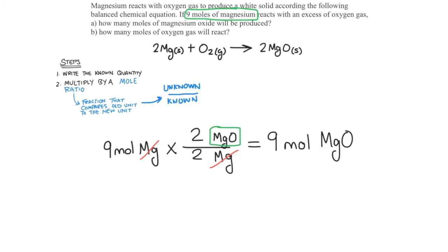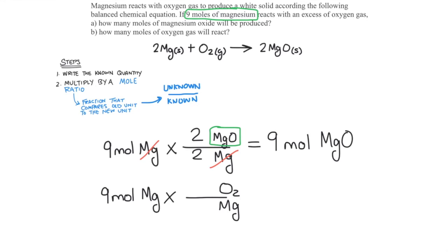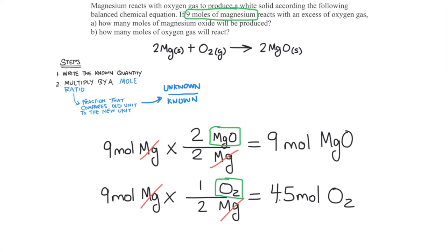This answer makes sense because the recipe says we should get equal quantities of magnesium oxide as we have magnesium. The second part of the question compares oxygen gas to magnesium. We'll use the same system. The known quantity is 9 moles of magnesium. We'll multiply that by the mole ratio that compares oxygen gas to magnesium — so the ratio is 1 mole of oxygen for 2 moles of magnesium. 9 times one-half gives us 4.5 moles of oxygen gas. This answer makes sense because the recipe says we should get exactly half as much oxygen gas as we need magnesium.